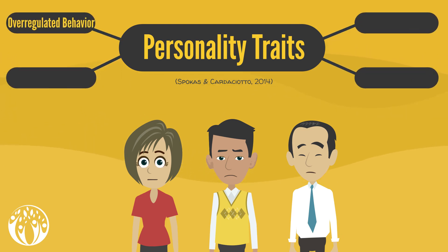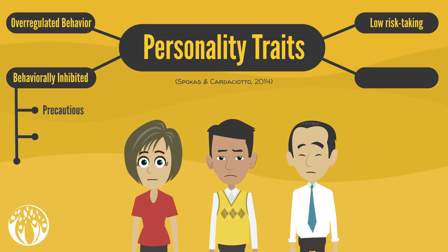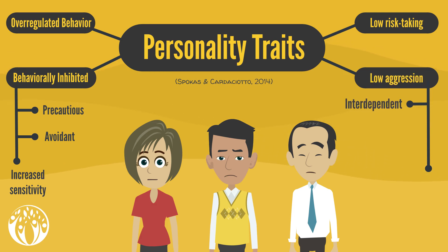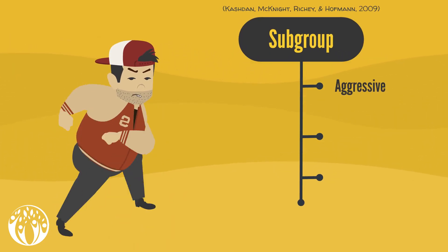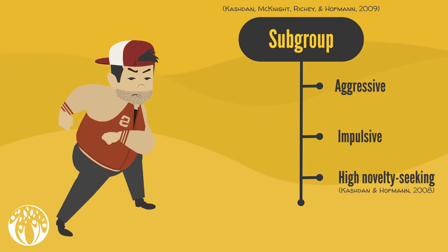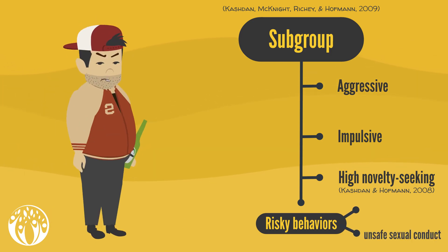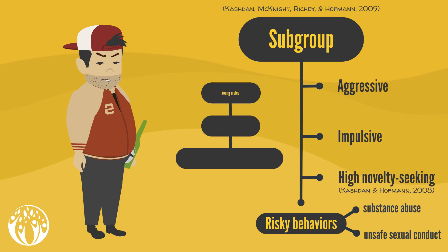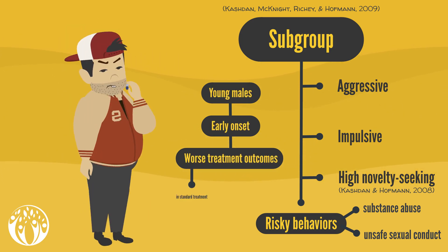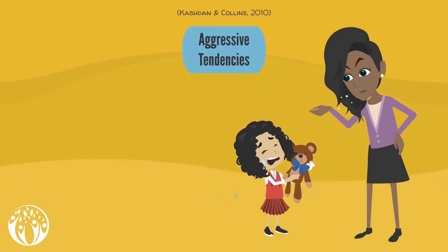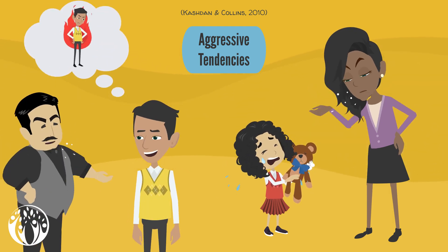Regarding the personality traits of SAD sufferers, we can also distinguish between subgroups. The typical profile of a socially anxious person tends to include over-regulated behavior, low risk-taking, and behavioral inhibition — meaning being precautious, avoidant, and displaying increased sensitivity especially when faced with new stimuli — along with low aggression, being rather interdependent and social harmony seeking. Another fundamentally different subgroup displays rather aggressive tendencies, tends to be impulsive, and is high novelty seeking. These characteristics come along with risky behaviors such as unsafe sexual conduct and often substance abuse. The typical profile of this subgroup is young males with an early onset of the disorder and worse treatment outcomes. Recent findings also suggest that socially anxious people can actually be high in aggressive tendencies, but only toward certain people such as family members, while others may experience anger without allowing it to manifest externally.